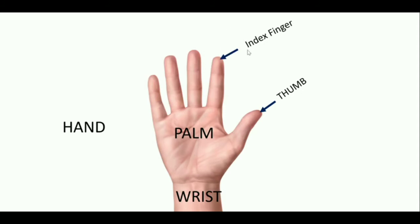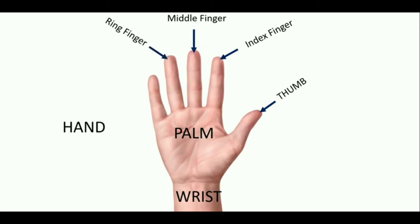This finger is known as the index finger, and we also call this finger the pointer. This finger is known as the middle finger, as it is at the middle of our hand with two fingers on either side. This finger is known as the ring finger.